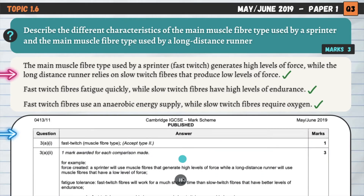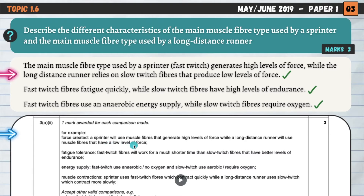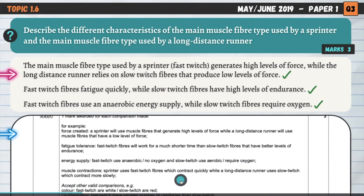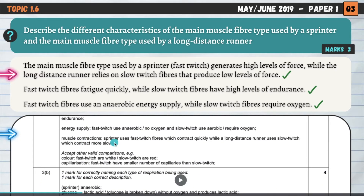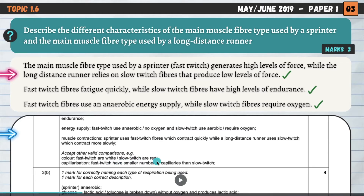Looking at the mark scheme: one mark awarded for each comparison made. The examples given are how much force the fibres create, their fatigue tolerance, and the energy supply they use. Additional valid comparisons include: sprinter uses fast twitch fibres which contract quickly, while long distance runner uses slow twitch fibres which contract more slowly. We could also say fast twitch fibres are white and slow twitch fibres are red due to their blood supply, as slow twitch fibres require oxygen and therefore a good blood supply. The final point is about capillarisation — slow twitch fibres have lots of capillaries, whereas fast twitch don't.